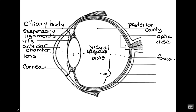Everything else on the outside of the eye except for the cornea is your sclera. The middle layer, which lies underneath the sclera, is the choroid. And then the last inner layer is your retina, which you've probably heard of before.